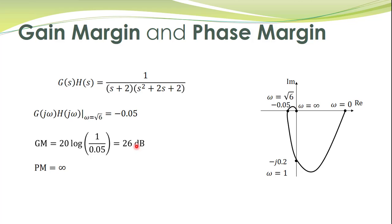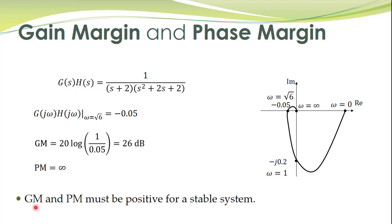To determine phase margin, we locate the point on the polar plot with magnitude equal to 1. Since all points on this graph have magnitude less than 1, the phase margin is infinity — no matter how much phase angle is added, the system will always remain stable. Gain margin and phase margin must both be positive for stable systems.